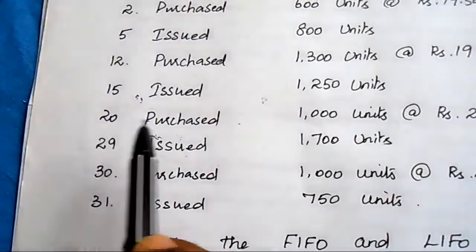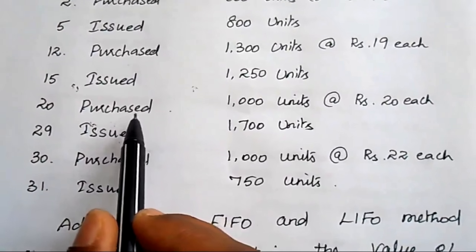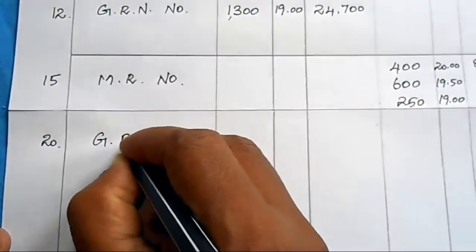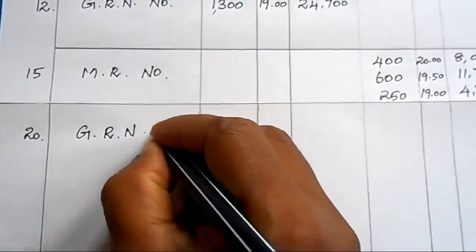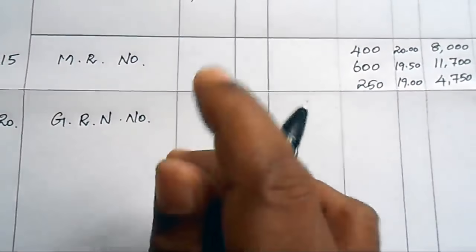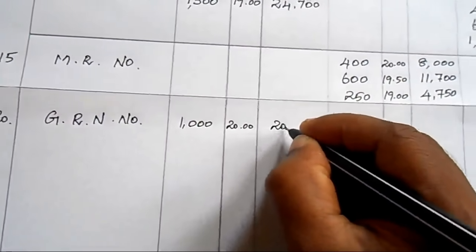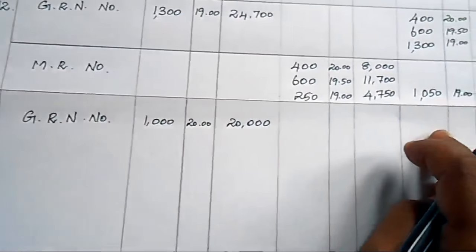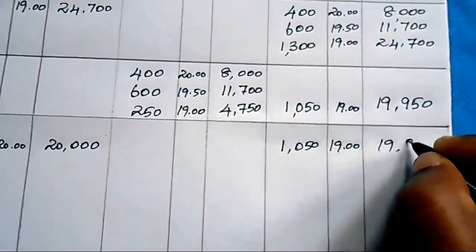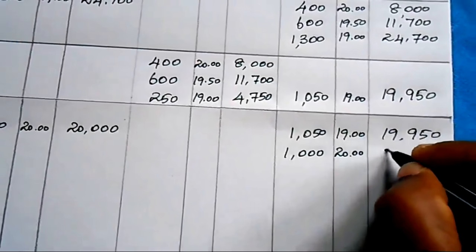On 20th May, purchased 1000 units at ₹20 each. Enter in the receipt column with the Goods Received Note number. Amount: 1000 × 20 = ₹20,000. Update balance: already had 1050 units at ₹19 = ₹19,950, plus new 1000 units at ₹20 = ₹20,000. Total: 2050 units in two lots.